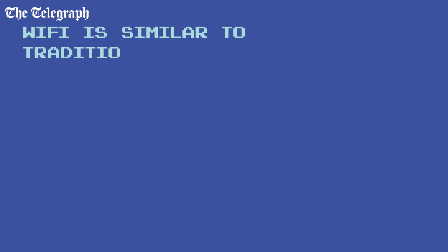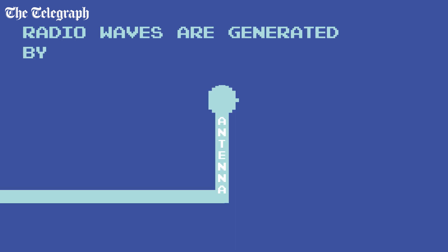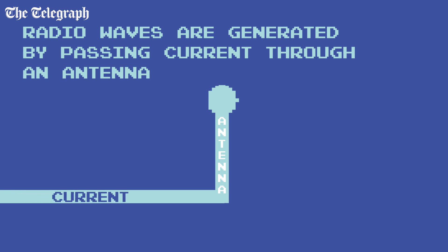The basis of wireless internet technology is much like traditional radio. In fact, the first wireless data signal was developed in 1971 using ham radio equipment. All radio works in a similar way. When you pass an electric current through an antenna, the electrons move in a pattern.